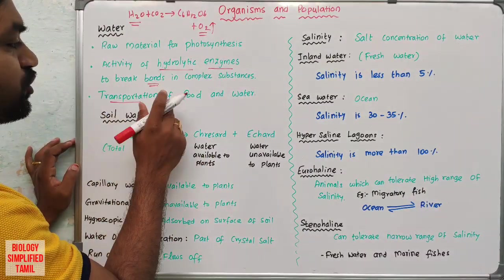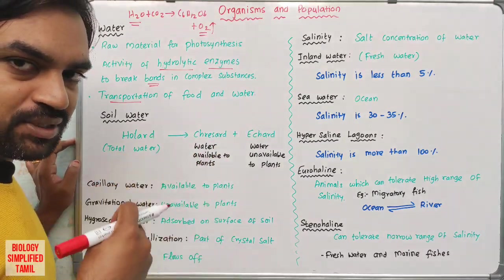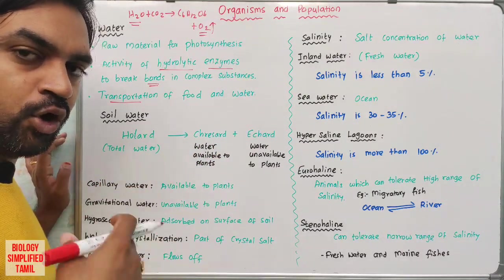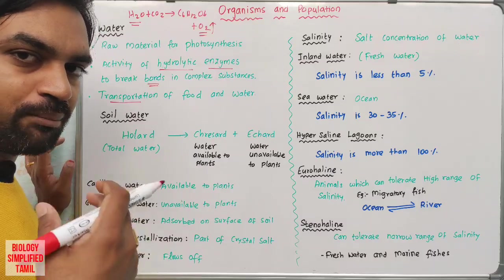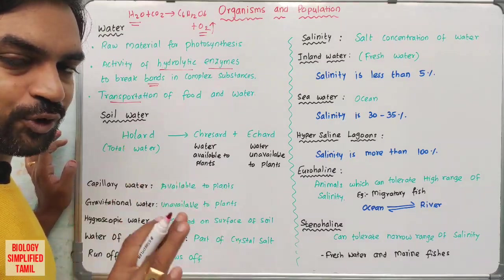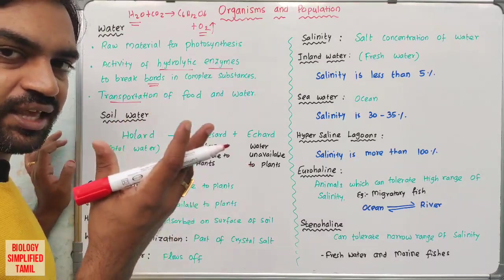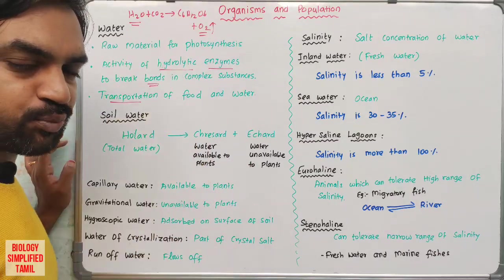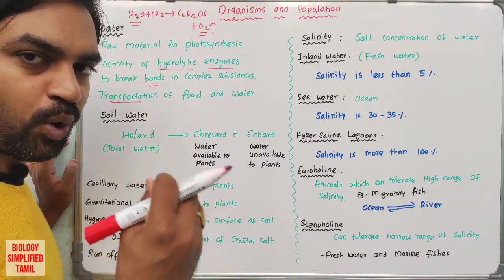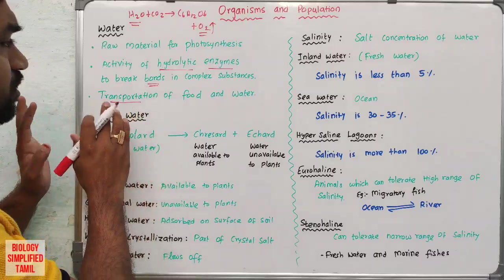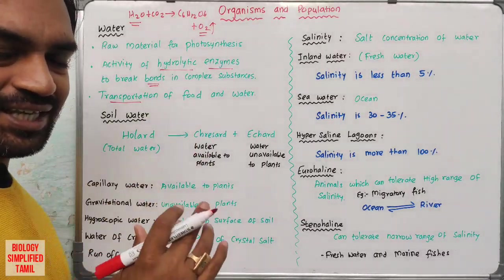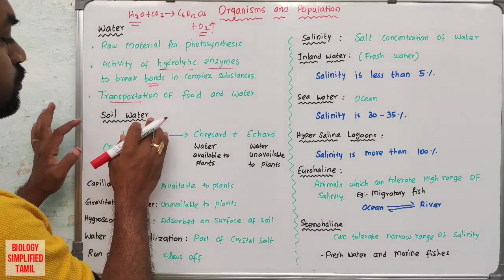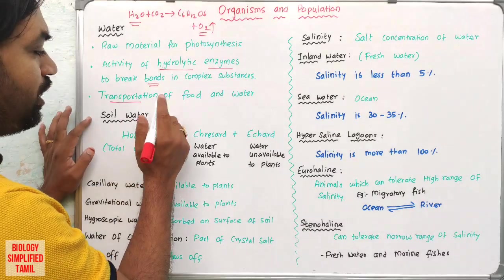Next, transportation of food and water. Food after digestion is in simpler form. Our body uses blood to transport water. Plants also use water to transport materials to other parts of the plant. Our soil water is very important.